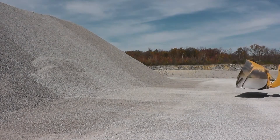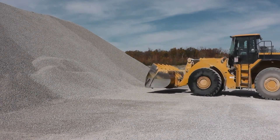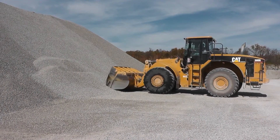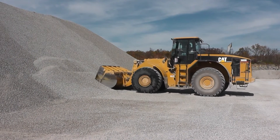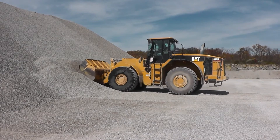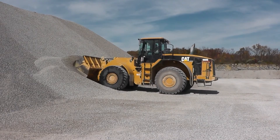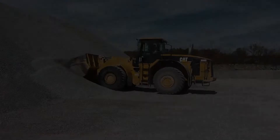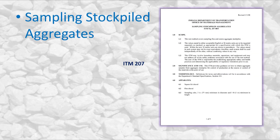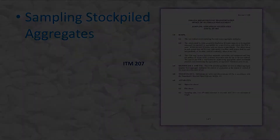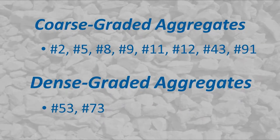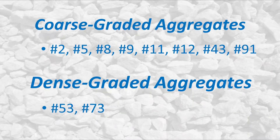The following video presentation describes the proper methods by which a representative sample may be obtained from stockpiled aggregates. This presentation will cover sampling fine aggregates and coarse aggregates from stockpiles following procedures set out in Indiana Test Method ITM 207. Coarse aggregates include both coarse-graded and dense-graded aggregates.